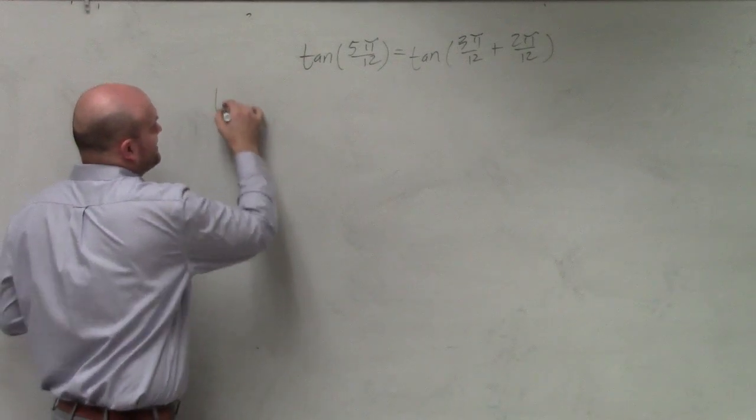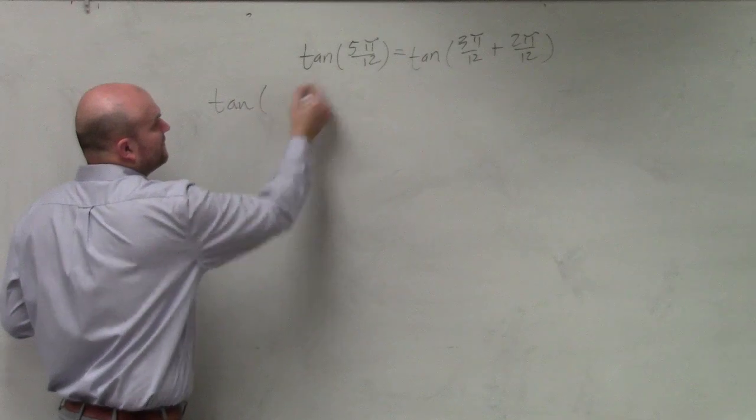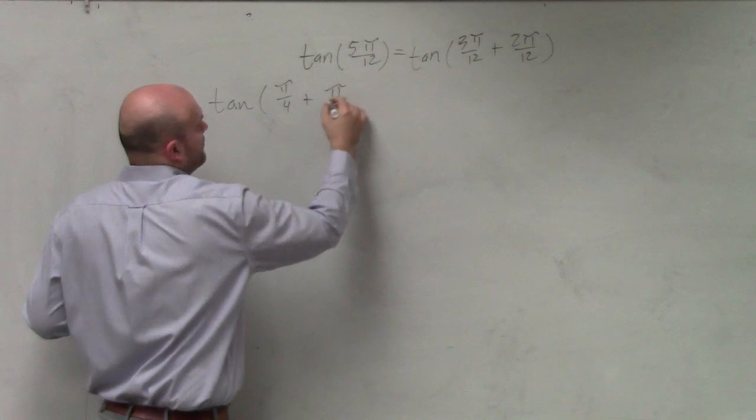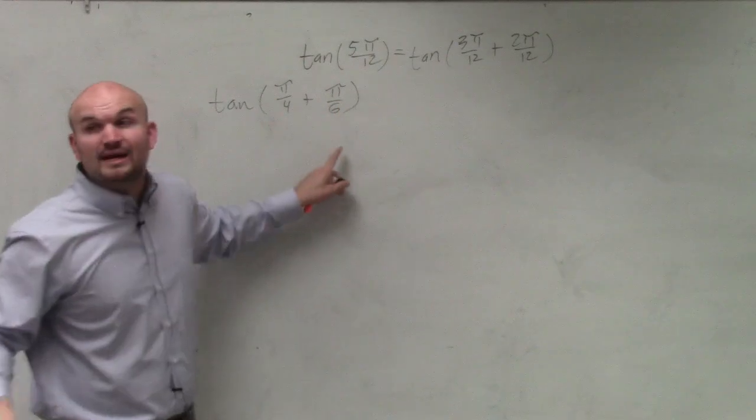Therefore, I can rewrite this as the tangent of, I can simplify that to π over 4 plus π over 6, when it is simplified.